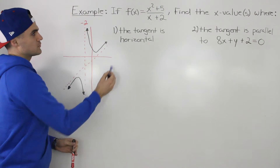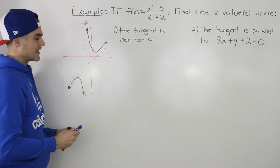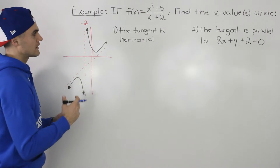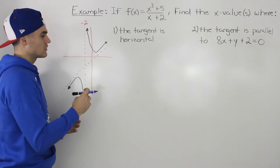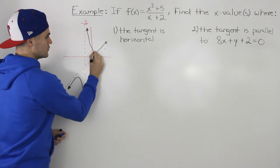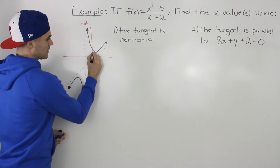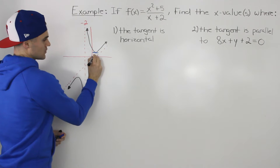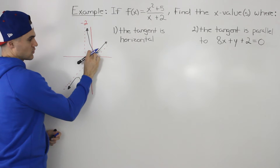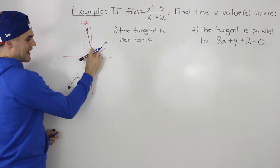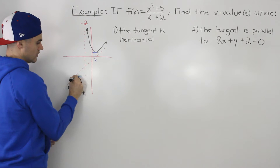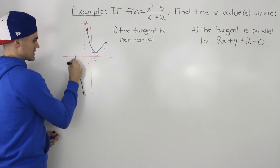The first question is to find the x values where the tangent is horizontal. We know that the tangent is always horizontal at a minimum or maximum point. So if you notice, it's going to be horizontal here at this point, and we have to find this x value. And over here it's going to be horizontal as well, so we have to find this x value too.